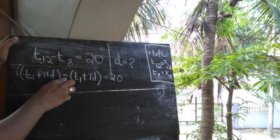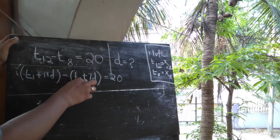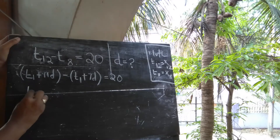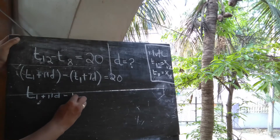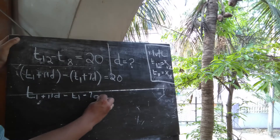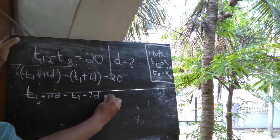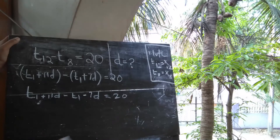We will change the sign to the minus sign. t1 plus 11d minus t1 minus 7d equal to 20.